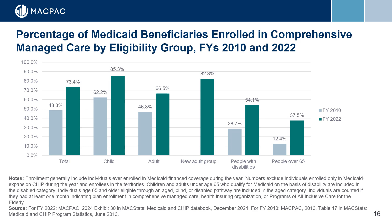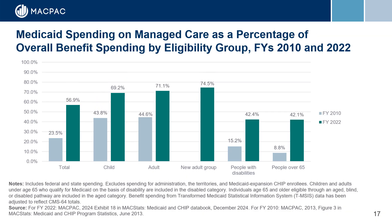We also broke down Medicaid spending and enrollment by delivery system. This graph shows that comprehensive managed care has grown over time and is now the predominant delivery system. In FY2022, nearly three-quarters of enrollees were enrolled in comprehensive managed care, which is a roughly 50% increase from FY2010. The growth in managed care was concentrated in individuals over 65 and those eligible on the basis of disability. Managed care spending accounted for over 50% of Medicaid benefit spending in FY2022, with total benefit spending amounting to approximately $773 billion.